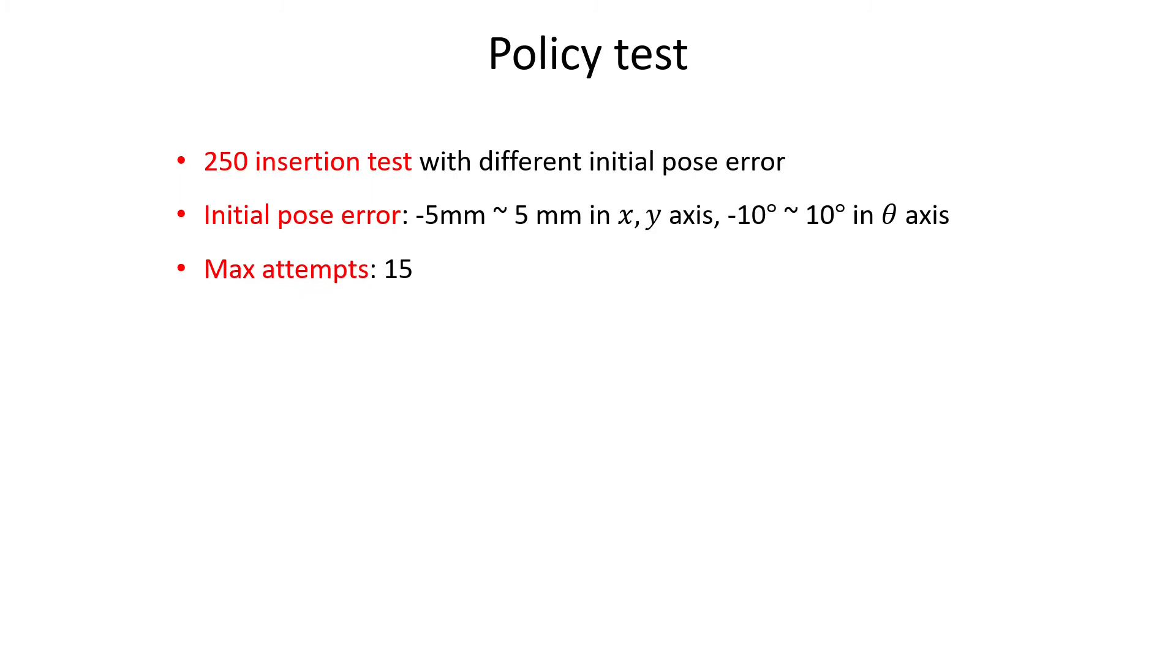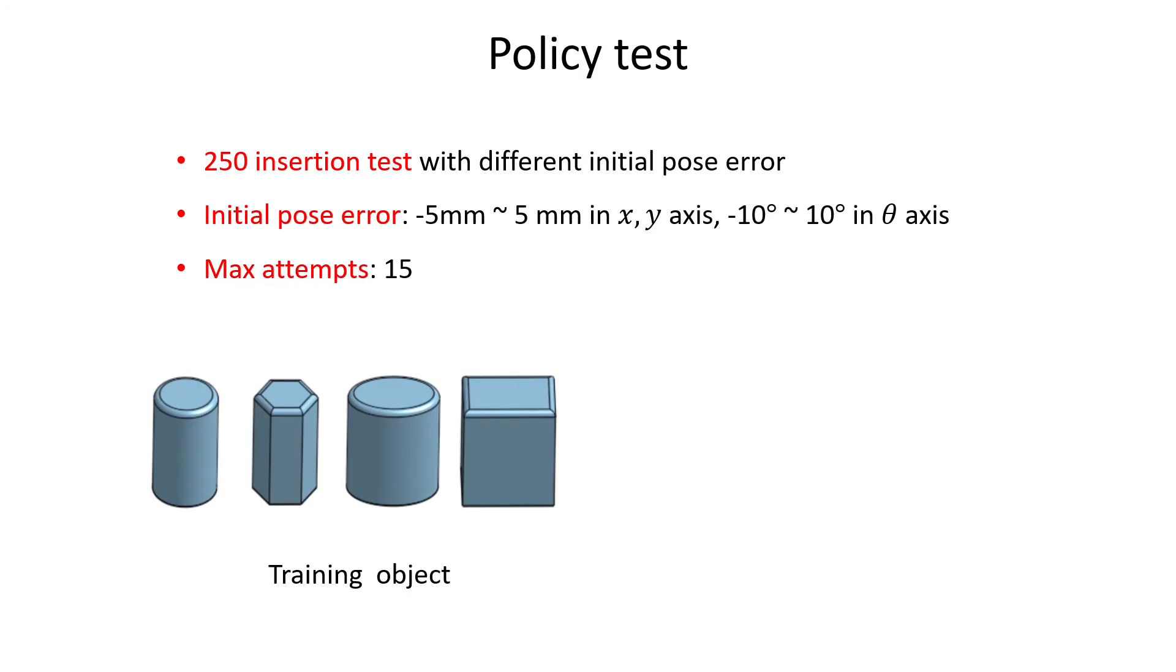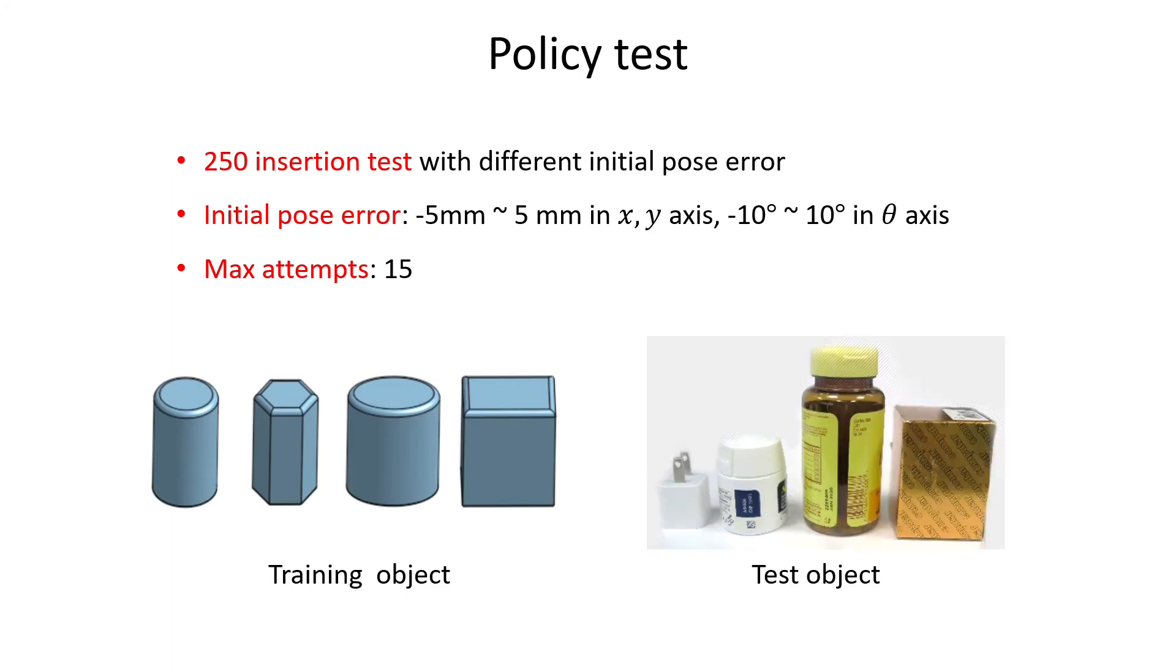We test all the policies with 250 insertion experiments for each of the four training objects and the four testing objects, including two bottles, phone charger, and a paper box. The initial error in xy-axis ranges from minus 5 to 5 millimeter and minus 10 to 10 degree in yaw axis. The maximum number of attempts is 15.